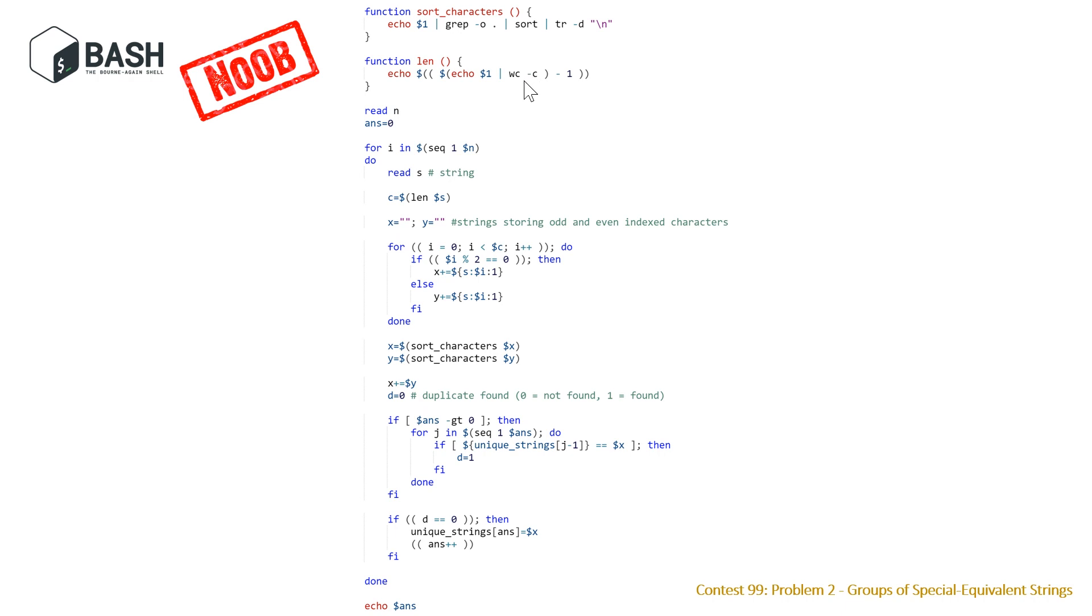Then we read in n. I had to add this because LeetCode doesn't actually support bash, so I was testing this in just a bash editor or bash terminal. Then we declare our answer to be zero. Then we're going to loop through the number of strings that we have, read in each of these, get the length of our string, initialize our two substrings odd and even which we're calling x and y here. Then we're looping through each of the indices in our string, and then if it's an even one we're going to add it to the back of x and if it's odd we're going to add it to the back of y. Then once we have these two substrings we sort them with our sortCharacters function.